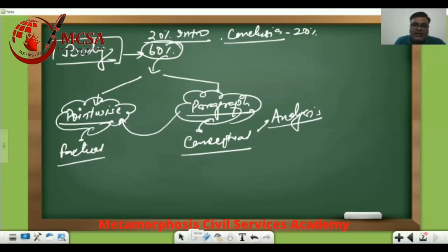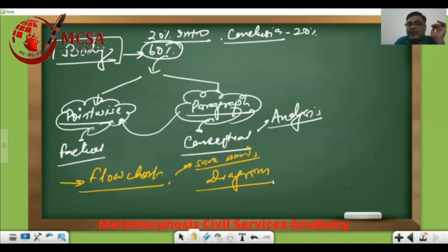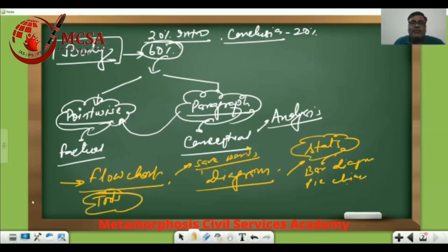Every answer should be supported with a flow chart. Be it history, polity, economy, geography, environment — anything. That is actually the art of writing, because that way you will be able to save your words. There should be appropriate diagrams as a way of presentation. If possible, and if the question calls for it, you should give suitable stats using bar diagrams, pie charts, etc. These are tools to minimize your word count as well as to satisfy the examiner that you are a well-versed candidate.